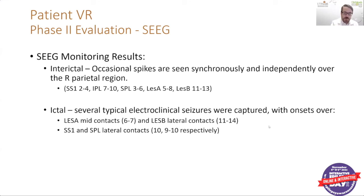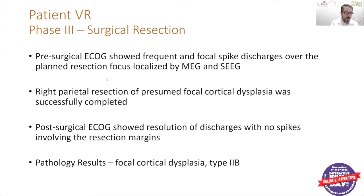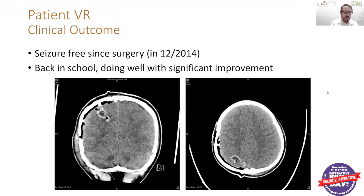This patient underwent surgical resection with EEG electrocorticography prior to surgery, which showed frequent discharges over the planned resection area localized by MEG and stereo EEG. She then underwent right parietal resection of this area. Postoperatively, EEG electrocorticography on the surface of the brain showed resolution of those discharges with no spikes around the area of resection. Pathology results indicated cortical dysplasia — the abnormal brain tissue commonly associated with seizures. The patient has been seizure-free since her original surgery, is back in school, and doing well with significant improvement. The resection was a very small area over this right parietal region.